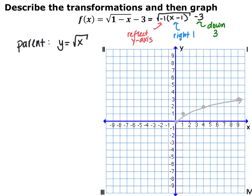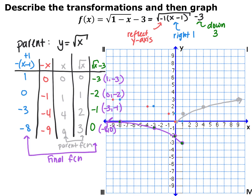When doing your transformations, make sure you do multiplication first. Here we do the reflection across the y-axis first. Graphically, take each point and reflect across the y-axis. In the table, I started with my parent function, picking perfect square values for x, getting y-values 0, 1, 2, 3. I multiplied all x-coordinates by negative one to reflect across the y-axis. Then for translations, I added 1 to all x-coordinates to shift right 1, and subtracted 3 from all y-coordinates to shift down 3.